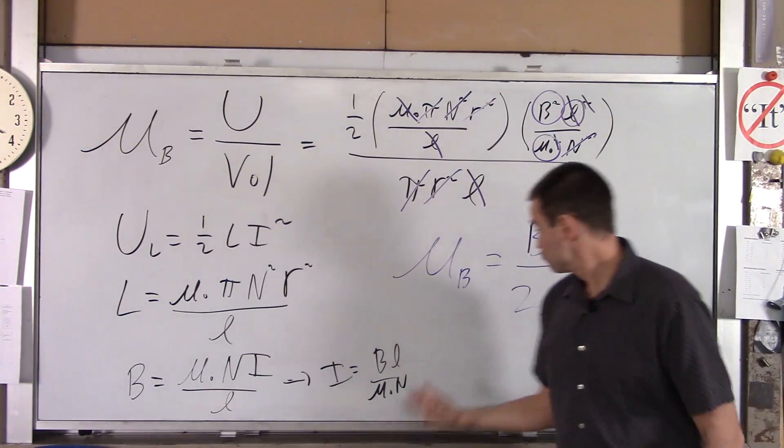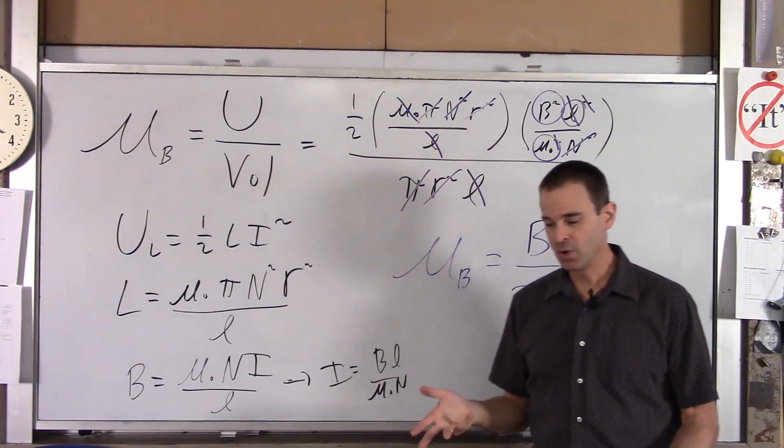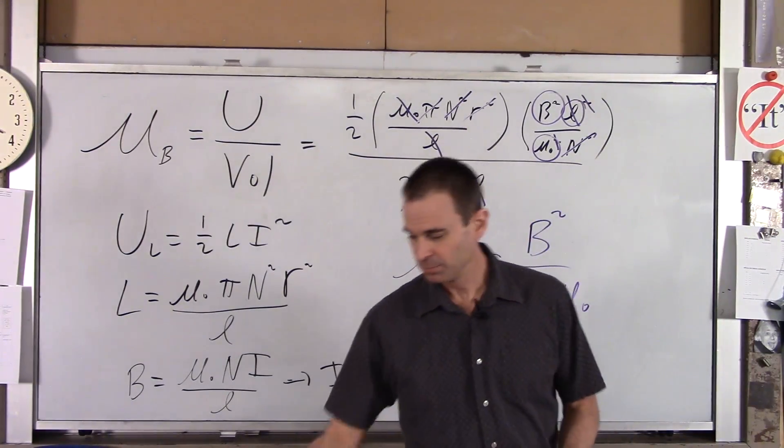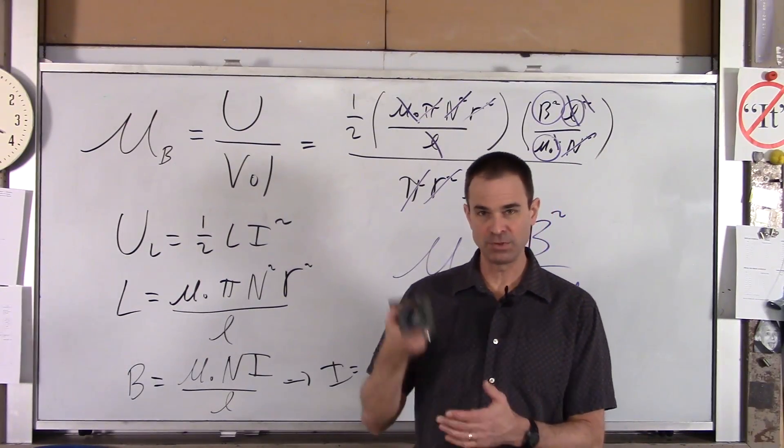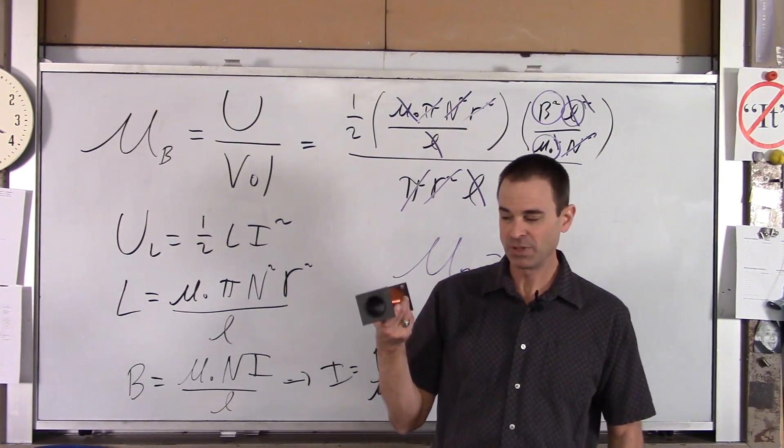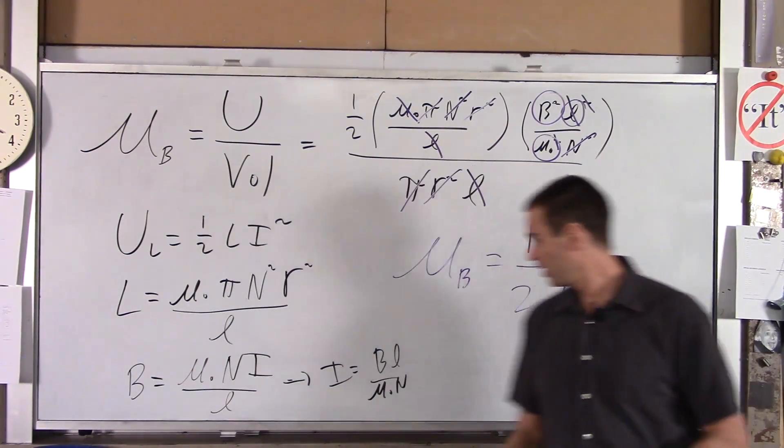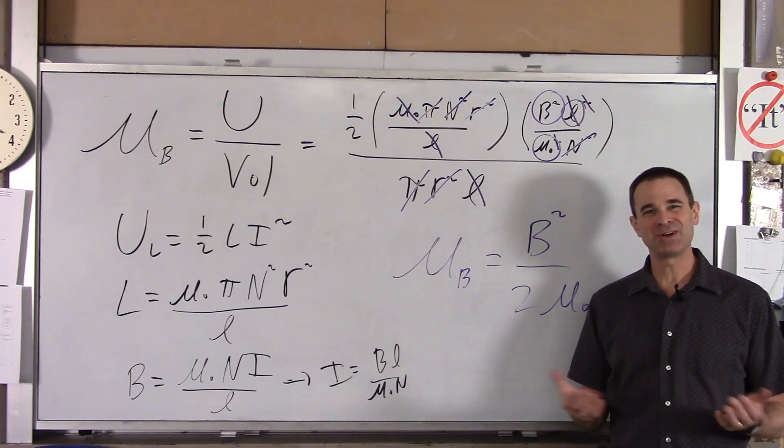So that's if you have the value for B and you know this value, you know how much potential energy per meter cubed is stored in the volume of this solenoid, this inductor, because of the magnetic field, or it was stored within the magnetic field. So I hope that was helpful and thank you very much.